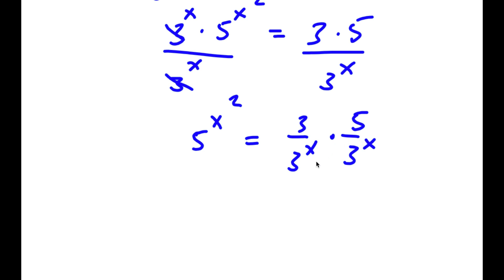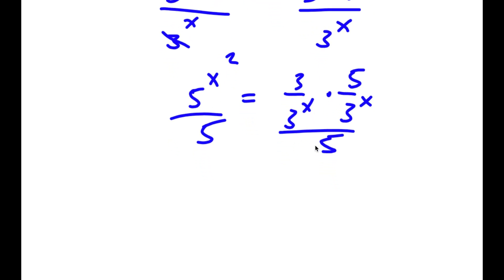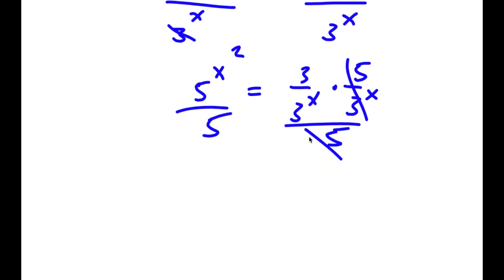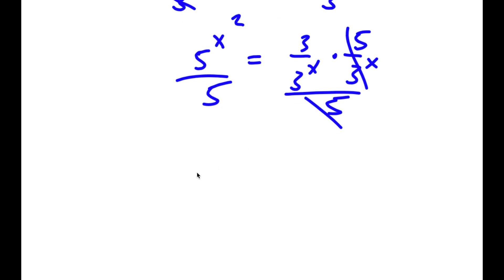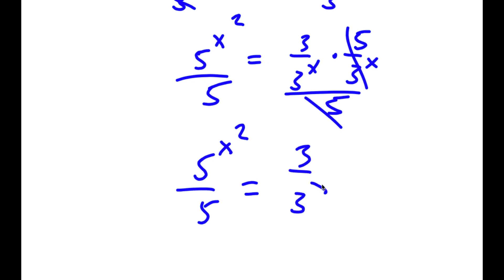Now I'm going to go ahead and divide both sides by 5. These two cancel out and I would be left with 5 to the power of x squared over 5 is equal to 3 over 3 to the power of x.